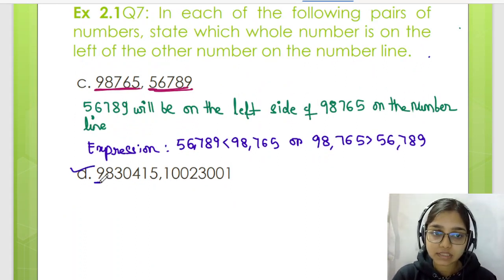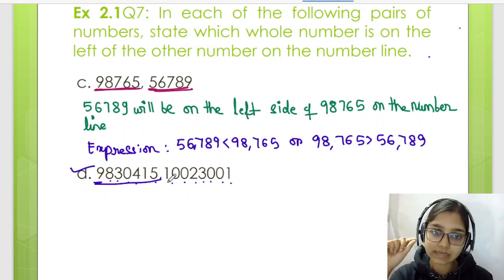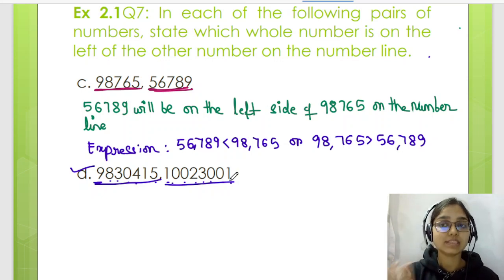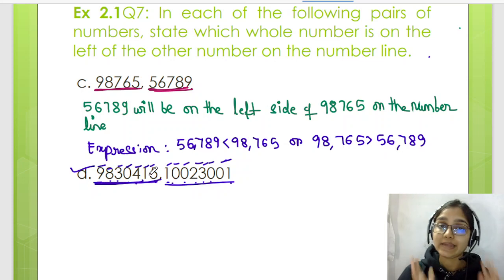Now let's solve question number D. Let's count the digits first. 1, 2, 3, 4, 5, 6, 7. Over here there is a 7 digit number. 1, 2, 3, 4, 5, 6, 7, 8. Over here there is an 8 digit number. Between 7 digit number and 8 digit number, the 7 digit number is going to be smaller as compared to the number which is having 8 digits. So this will be on the left side because it is smaller.